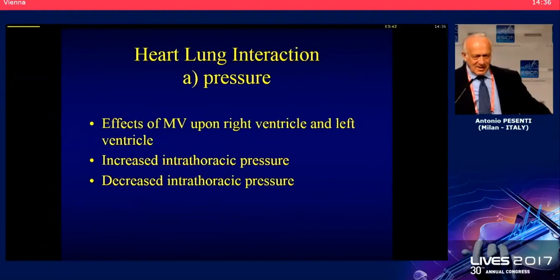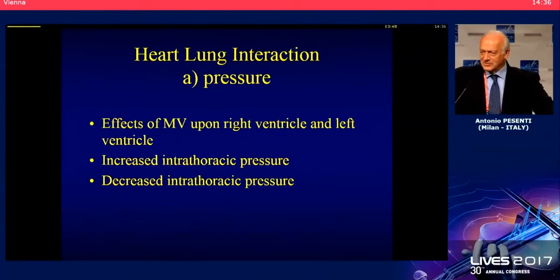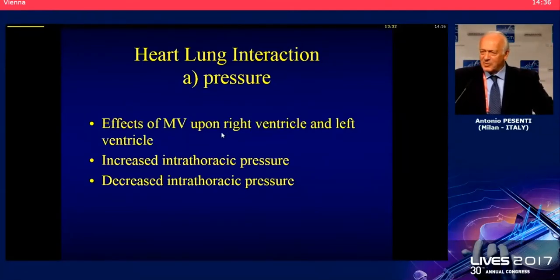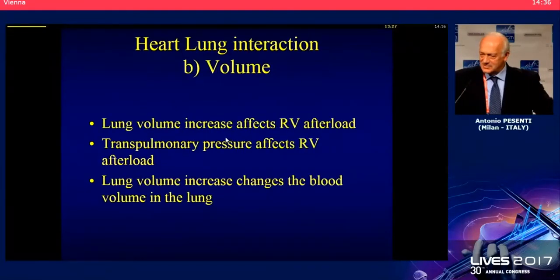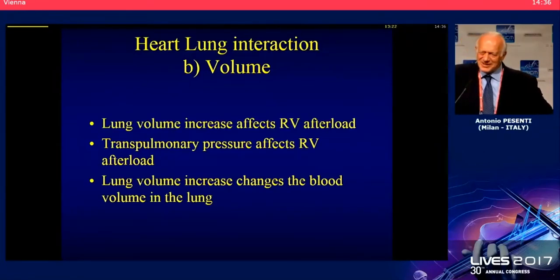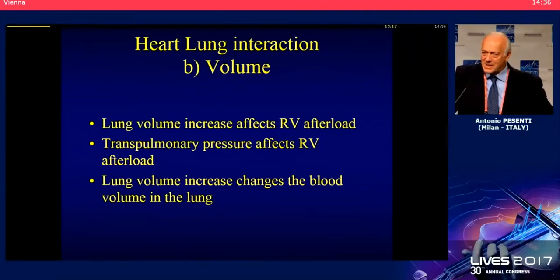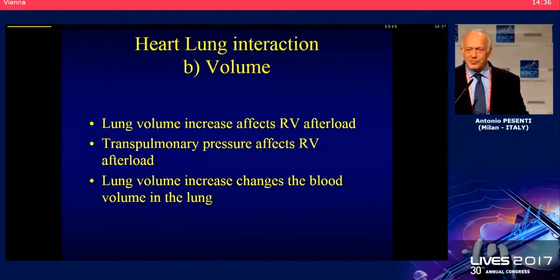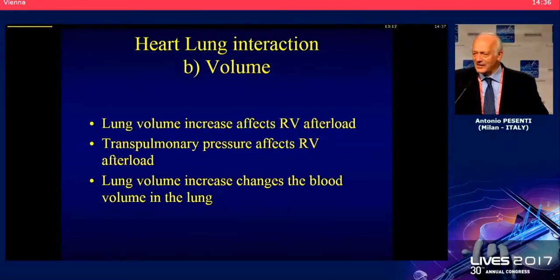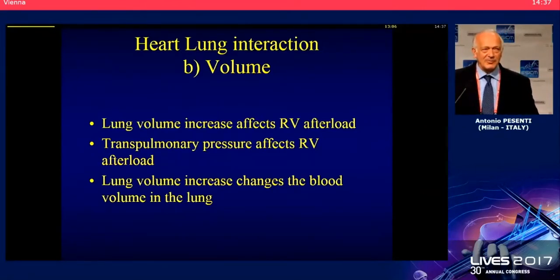As we have just heard, heart-lung interaction depends on pressure. Positive pressure has an effect upon the right ventricle and left ventricle. Changes in lung volume, broadly speaking, increase right ventricle afterload. Transpulmonary pressure therefore affects right ventricle afterload. If we increase volume, it means transpulmonary pressure is increased.